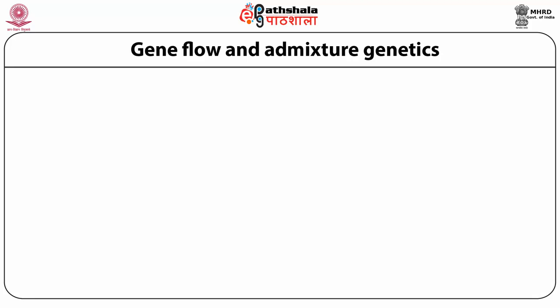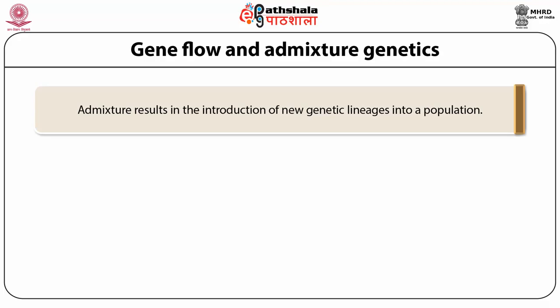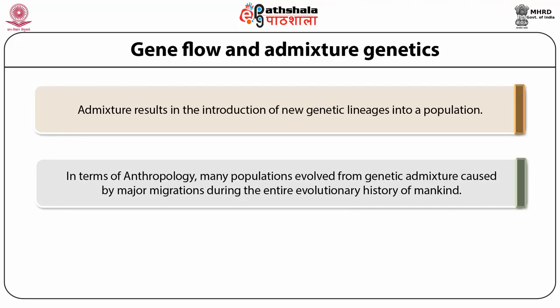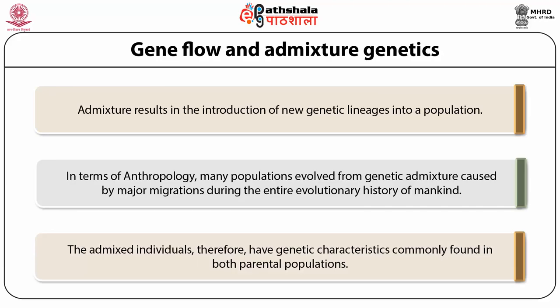Admixture genetics refers to the genetic structure of a hybrid or mixed population. Neighboring populations frequently exchange individuals, contributing to an ongoing process of bidirectional gene flow between themselves. It occurs when individuals from two or more previously separated populations begin interbreeding. Admixture gene flow results in the introduction of new genetic lineages into a population. It is known to slow local adaptation by introducing foreign unadapted genotypes. In terms of anthropology, many populations evolved from genetic admixture caused by major migration during the entire evolutionary history of mankind.